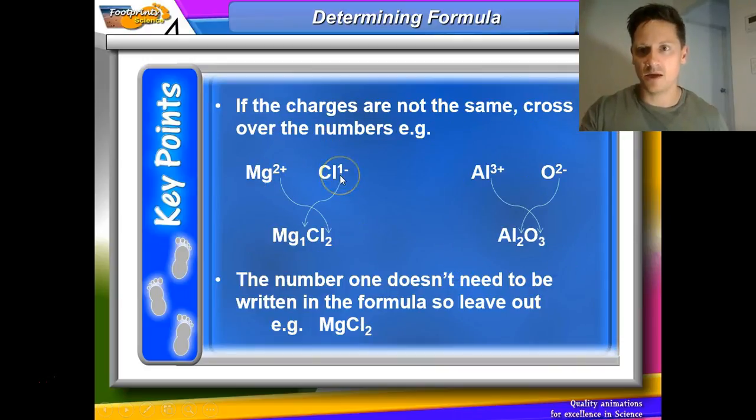Now if the charges are different, you can utilize the crossing over method. So all you need to do for the crossing over method, really simple. If you've got an ionic compound containing magnesium ions and chloride ions, the 2 from the magnesium goes to the bottom of the chlorine, and the 1 from the chloride charge goes onto the bottom of the magnesium. If there's a 1, you don't need to write it. You can just put Mg. So that crossing over makes MgCl2. Here, Al has a 3+ charge, O has a 3 on the bottom, O has a 2- charge, and the Al has a 2 on the bottom.